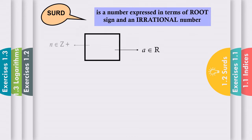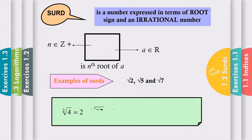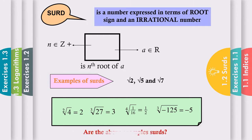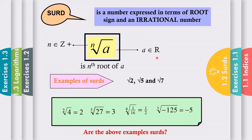Let us see what a surd means. Basically, a surd is a number expressed in terms of a root sign and an irrational number. We say it as the nth root of a. Here, n consists of positive integers — it must be positive. And a can be any real number. Examples of surds are: surd 2, surd 5, and surd 7.